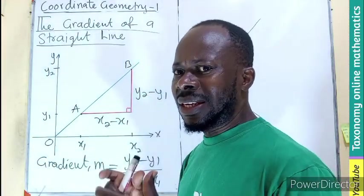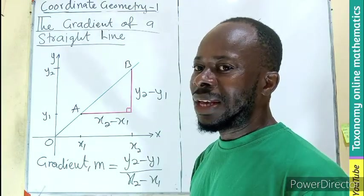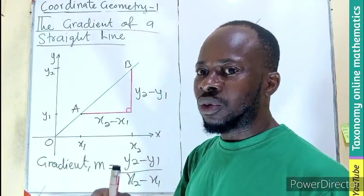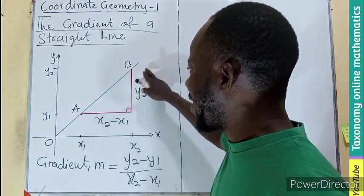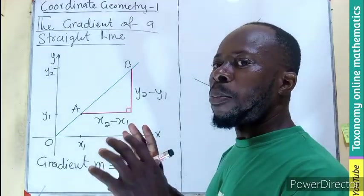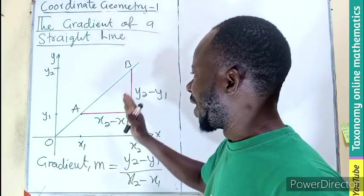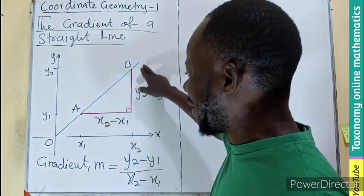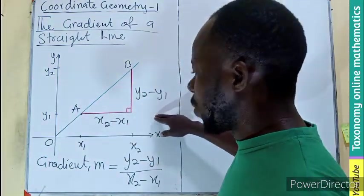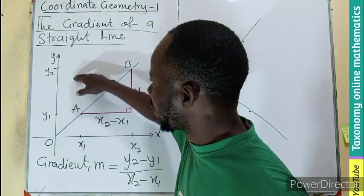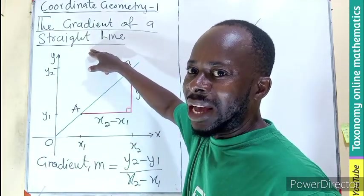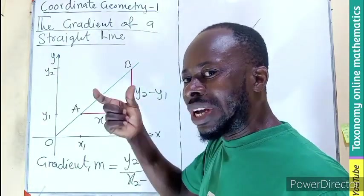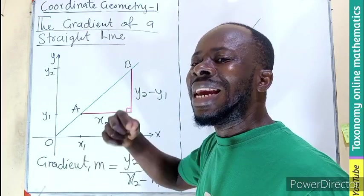We have different types of gradient based on its movement with respect to the x-axis. The one we are seeing in this direction will give us a positive gradient. So whether it is steep like this, or falls close to the x-axis, or is almost closer to the y-axis, we will always get a positive value.